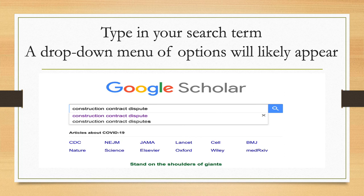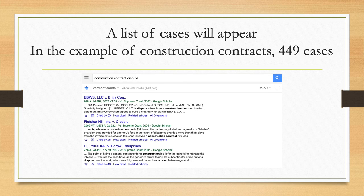Then type in your search term. A drop-down menu of fill-in options will likely appear as you're typing. Click on the search icon and a list of cases will appear. In the example I've used of construction contract dispute, 449 cases came up from my search.